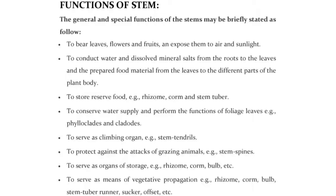Functions of stem: To bear leaves, flowers and fruits and expose them to air and sunlight. To conduct water and dissolved mineral salts from the roots to the leaves and the prepared food material from the leaves to different parts of the plant body. To store reserve food, e.g., Rhizome, Corm, stem tuber. To conserve water supply and perform the functions of foliage leaves, e.g., Phylloclades and cladodes. To serve as a climbing organ, e.g., stem tendrils. To protect against the attacks of grazing animals, e.g., stem spines. To serve as organs of storage, e.g., Rhizome, Corm, Bulb. To serve as means of vegetative propagation, e.g., Rhizome, Corm, Bulb, stem tuber, runner, sucker, offset, etc.